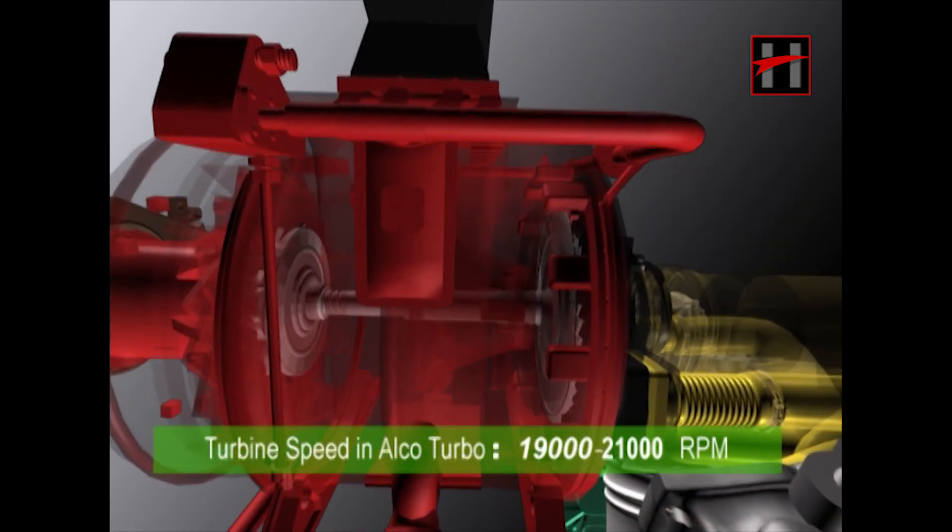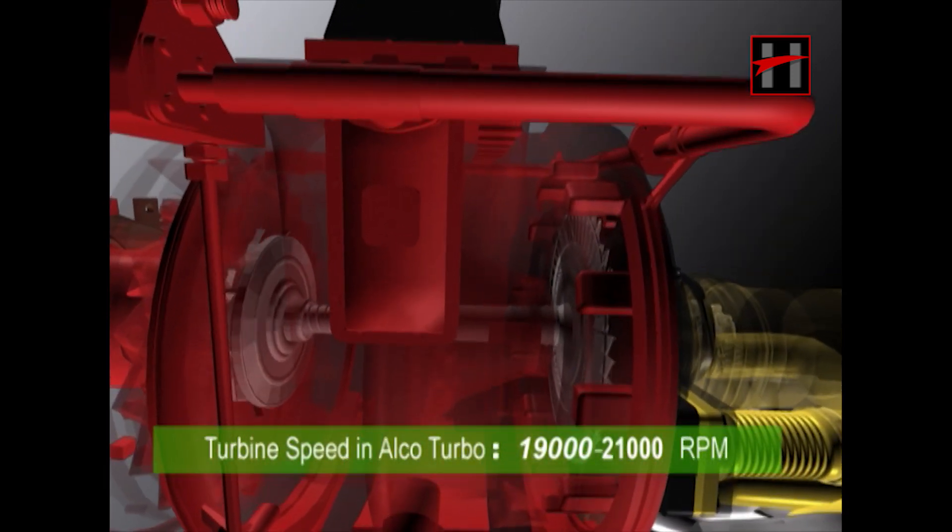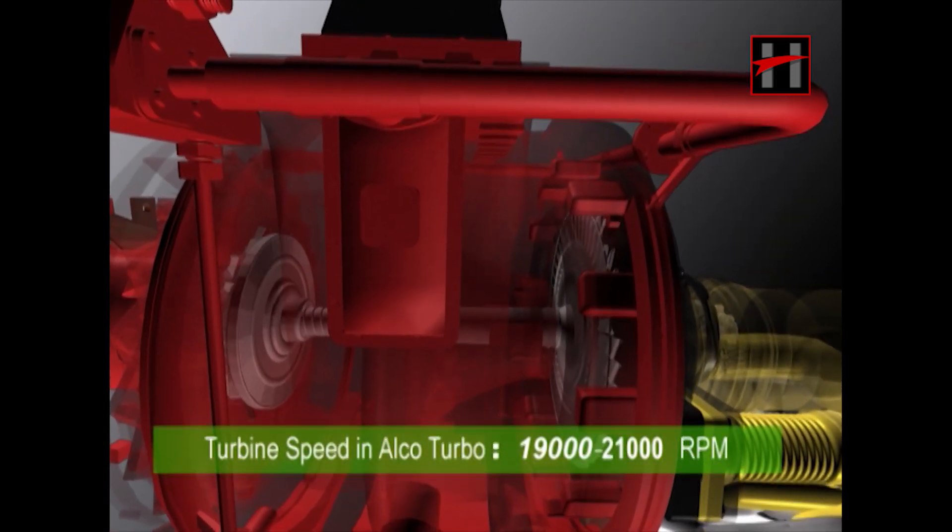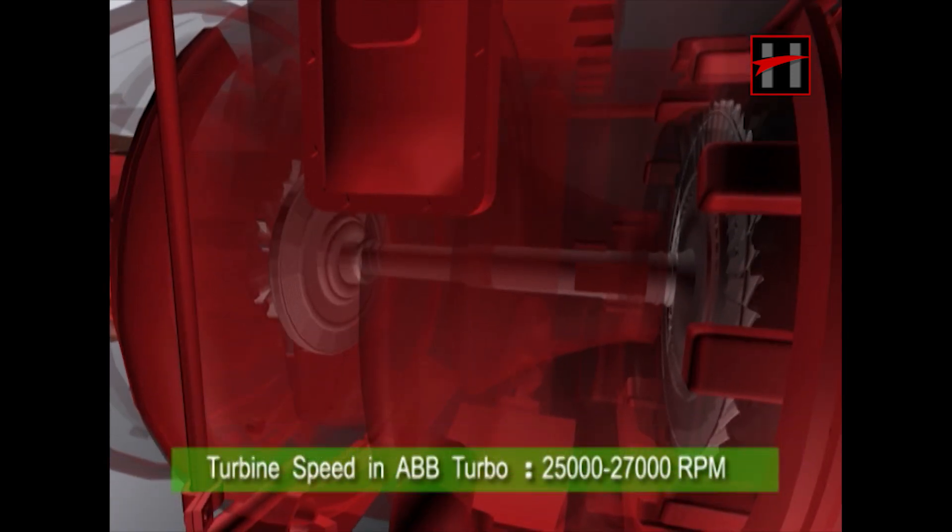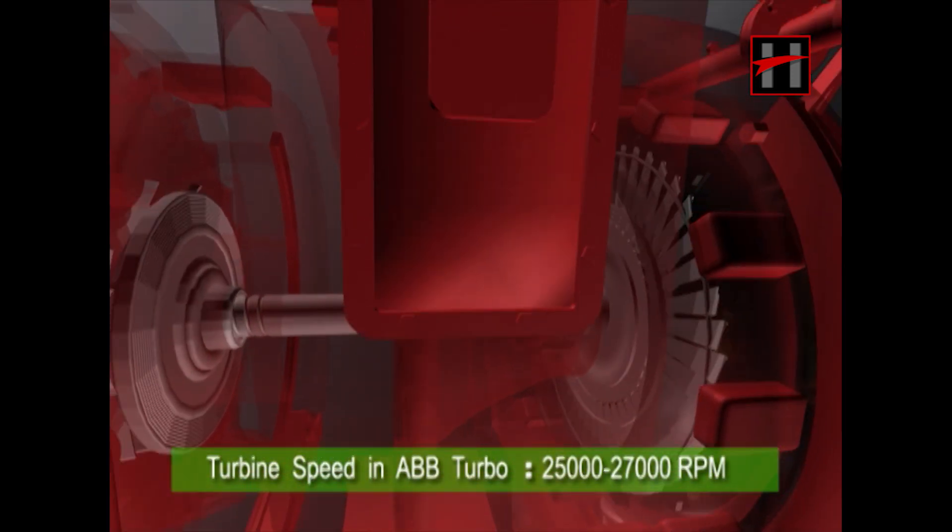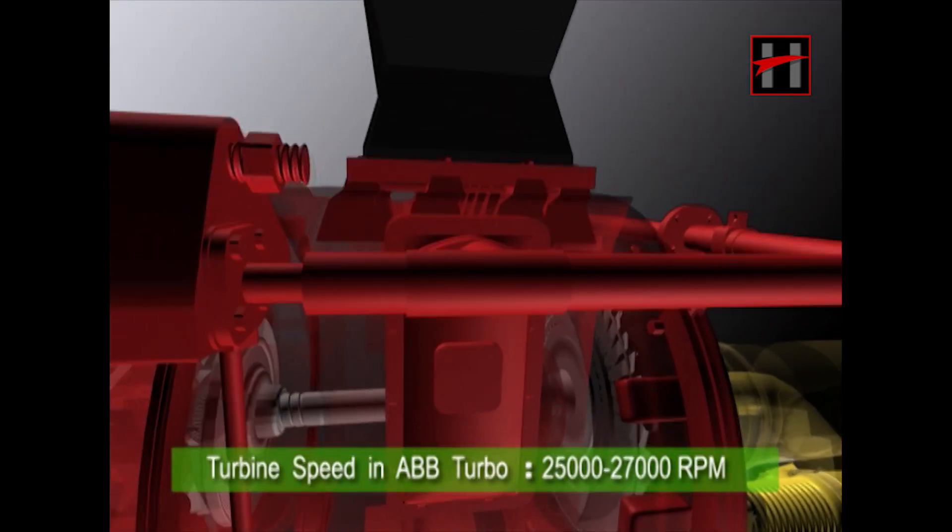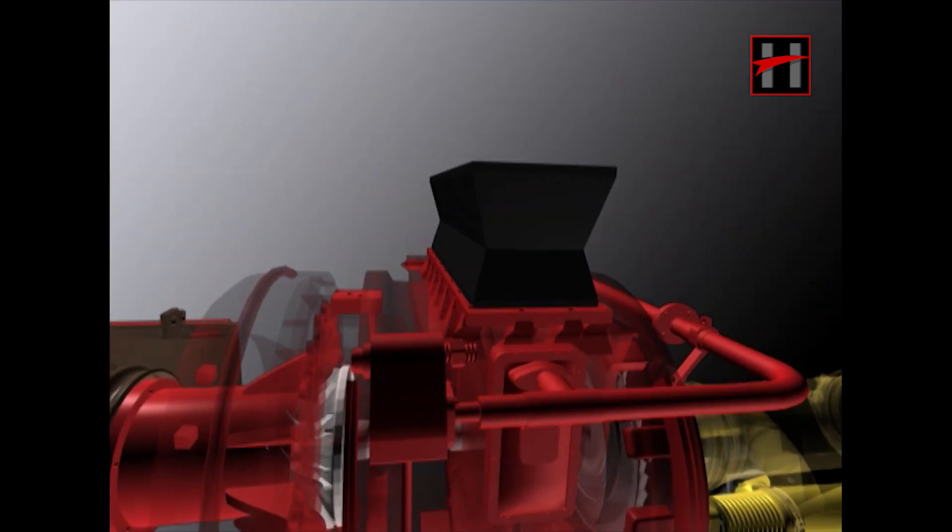In the Alco turbo supercharger, this speed is 19,000 to 21,000 rpm and in the ABB turbo supercharger, this speed is 25,000 to 27,000 rpm.